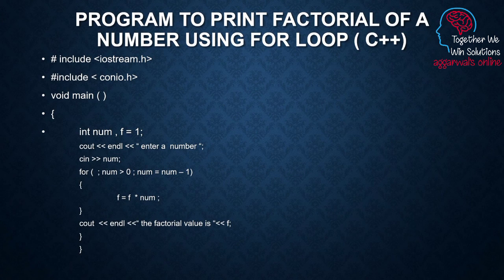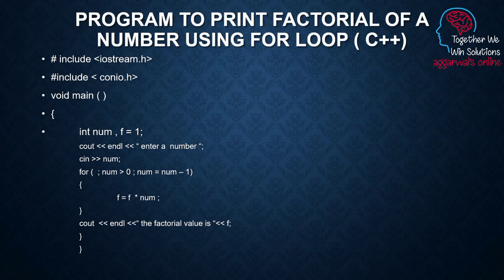The same factorial program is now done using a for loop. Again I take a number from the user into num. Notice in the for loop's initialization part I have left it blank — the initialization was already done before. The condition is num greater than zero, and the update is num = num − 1. Inside the body only the expression f = f × num remains. The old value of f multiplied by the current value of num gives the new value of f. When we exit the loop, the final value of f is displayed, which is the factorial.